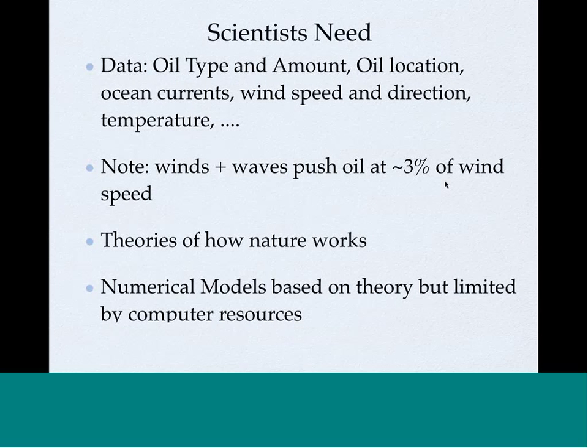Why is it hard to predict oil? Scientists need to know the oil type and amount, the location of the oil, ocean currents, wind speed and direction, and temperature because it affects evaporation. Winds and waves push oil at about 3% of the wind speed — for a 20-knot wind, that's a little over half a knot, the same size as ocean currents. We also need theories of how nature works, and based on those theories we build numerical models and do numerical simulations.